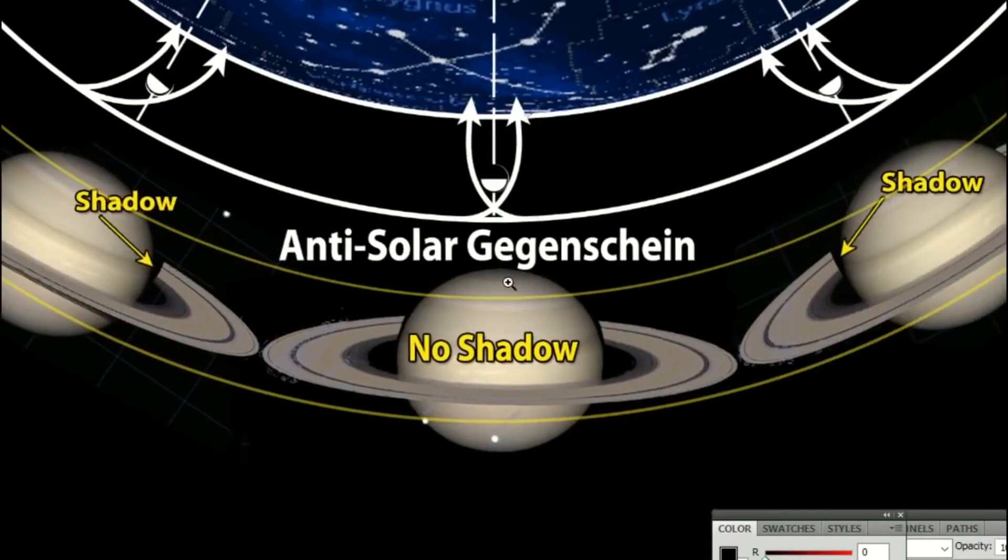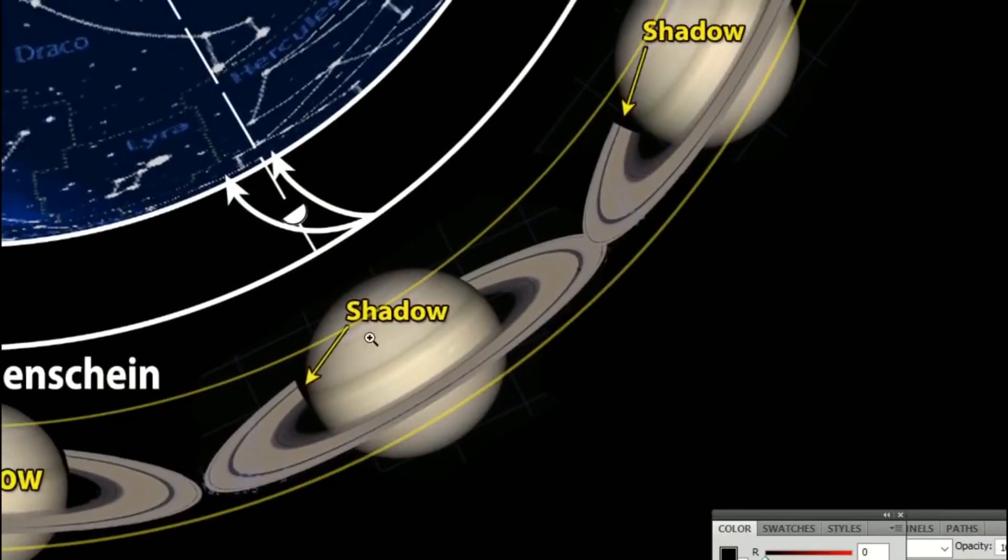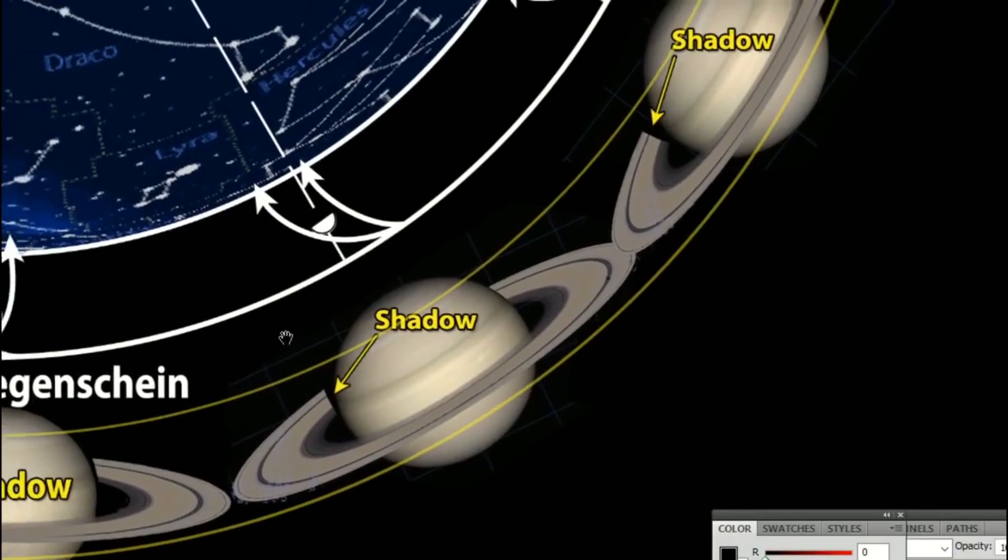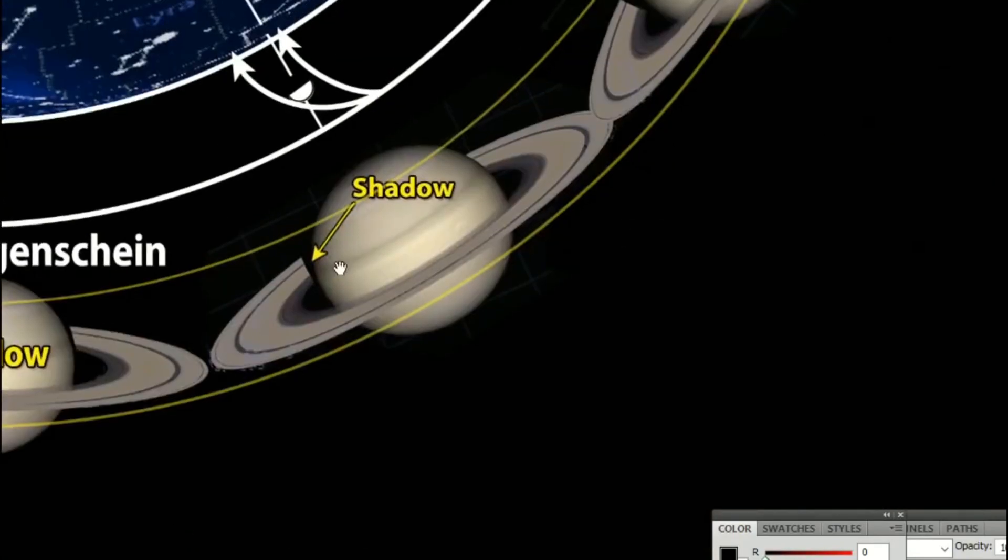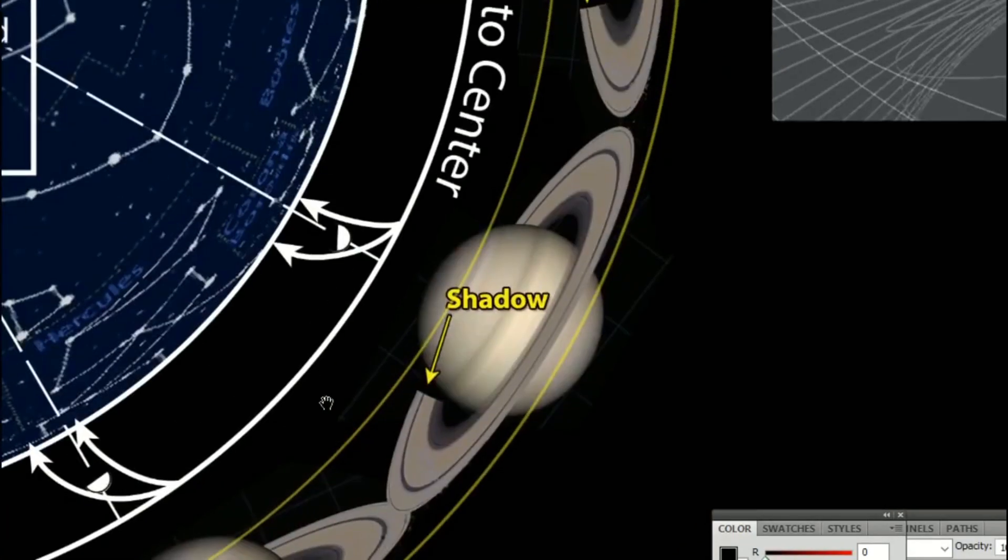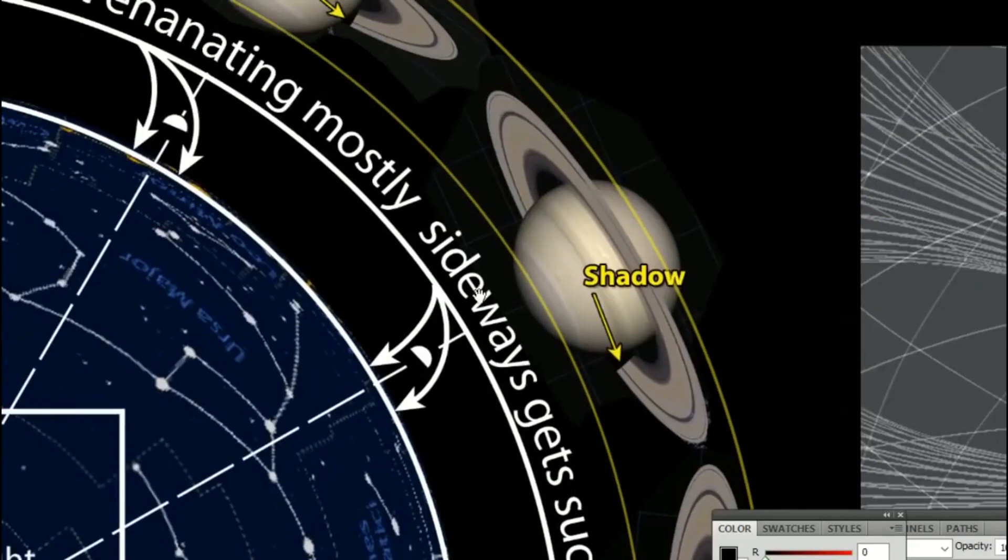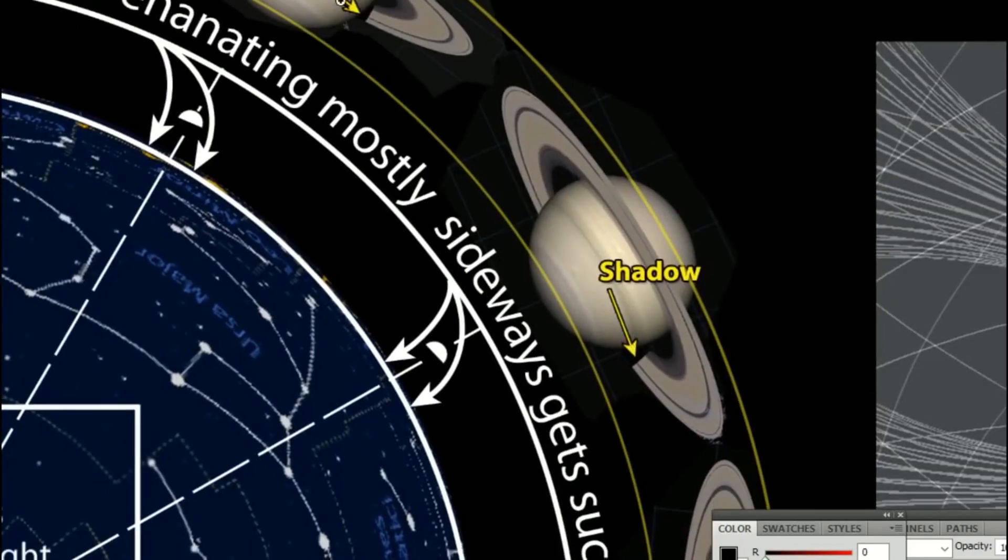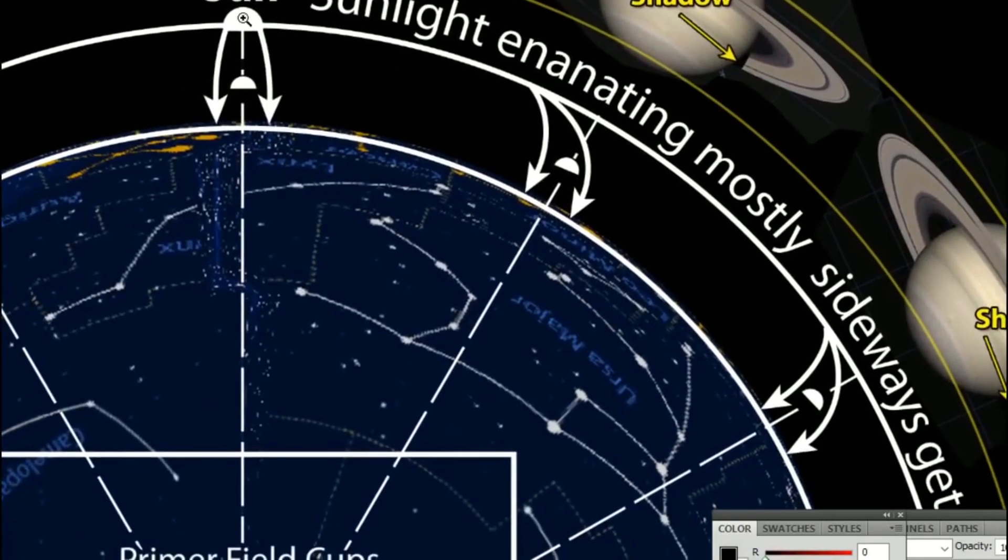This is the anti-solar Gegenschein zone, where the illumination, they call it Lambertian reflection, that's not really what's happening, it's just being flooded with light. Same thing with the moon. All the planets at the anti-solar region are going to be flooded with light, so there's not going to be any shadow. That's when we get a full moon. The shadow begins to go there on the left, and so on and so forth. Once it's right behind the sun, we don't get any shadow.